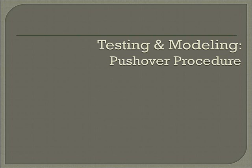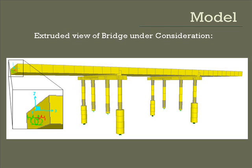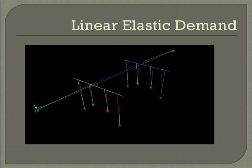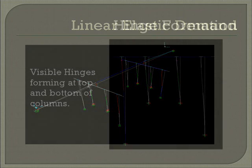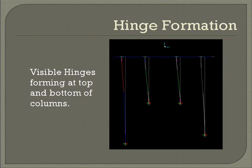This is an extruded view of the bridge used in the analysis. Abutment 1 is on the left, followed by Pier 2, Pier 3, and Abutment 4 on the right. The bottom of the center two columns on Pier 2 and Pier 3 have three translational springs and three rotational springs. Plastic hinge locations were defined by the shaded areas at the bottom of each column and at the top of each column. The linear elastic seismic demand on the structure was determined through a response spectrum analysis, and the transverse displacement capacity at Pier 2 was determined through a pushover analysis.